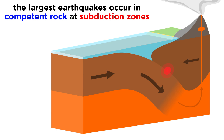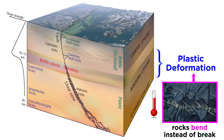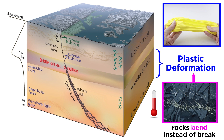Subduction zones are known for their massive earthquakes. This is because they are able to transport a very competent material — oceanic crust — to great depths and therefore great pressures. Normally, materials at these depths are too weak to cause earthquakes due to their high temperature, causing them to bend instead of break. This brings us to plastic deformation, which describes how weak materials deform, like silly putty.